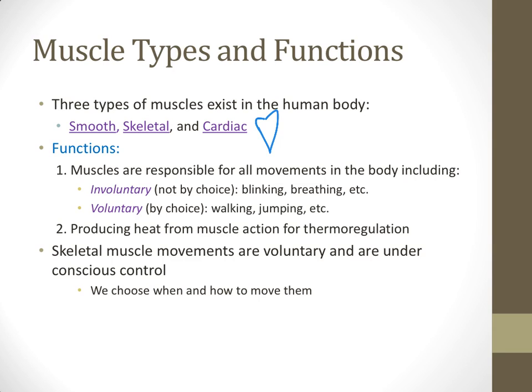Voluntary actions are the ones you consciously decide to do — walking, jumping, texting, writing, talking, all of those things. The second major function of skeletal muscle is to produce heat for the body, which helps to maintain homeostasis. In order to keep the body at about 37 degrees Celsius, the muscles create quite a lot of that heat.